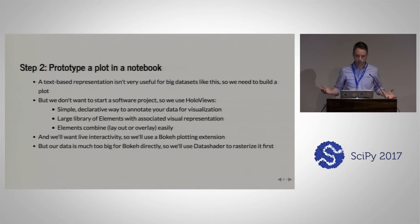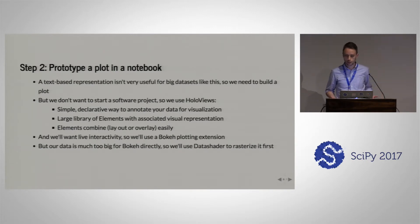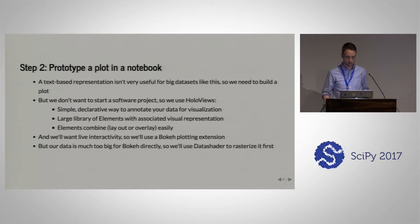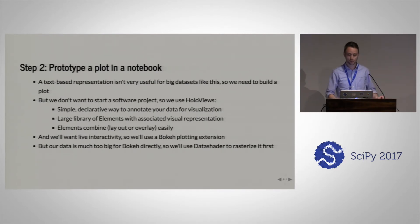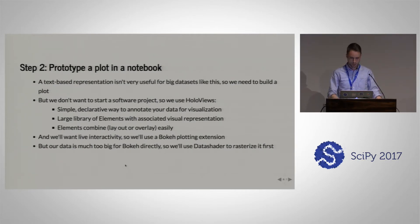Now that we've loaded the data, we want to visualize it exploratorily at first, then graduate to something more stable. For that, we'll be using HoloViews. HoloViews provides simple declarative ways to annotate your data for visualization and a large library of elements to wrap your data, each with an associated visual representation. It makes it easy to compose elements, lay them out, overlay them in different ways, and it has different back-ends to render plots. We'll use the Bokeh backend. Our data is way too big to drop straight into the browser — you can't just send 12 million points to the browser — so we'll use DataShader to rasterize the data first.